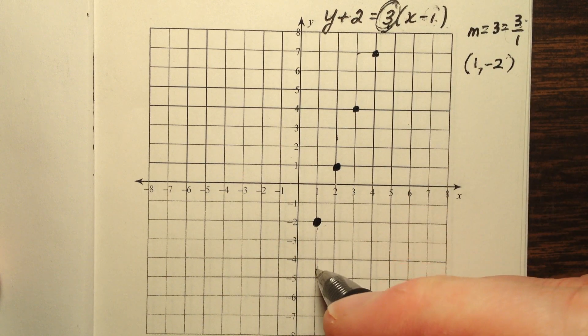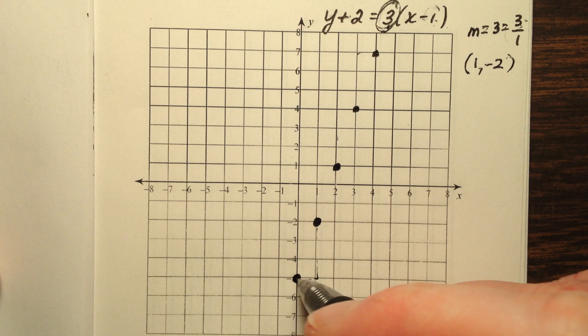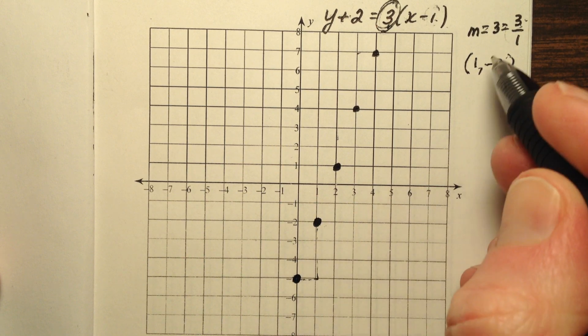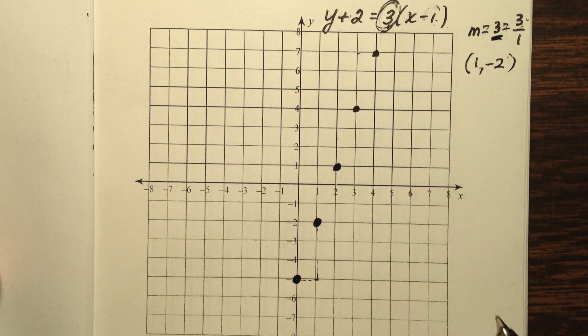Similarly, we could go down 3 and back to the left 1, because that would be a negative 3 and a negative 1. And those two negatives would cancel each other out to give us this positive 3 that we see up here.